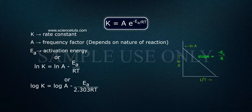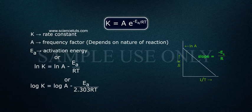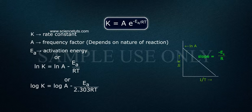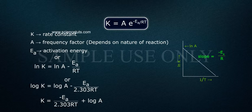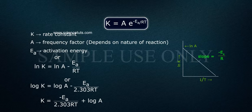Or log K equals minus Ea by 2.303 RT plus log A. This has the form Y equals MX plus C.